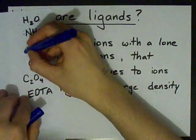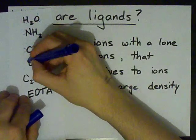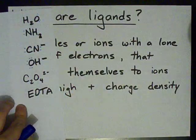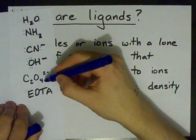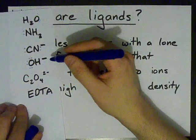A CN- ion has a lone pair on the C and on the N. This OH- ion, or hydroxide anion, has three lone pairs. This is the oxalate anion. It's got a negative 2 charge and some oxygens. It almost certainly has some lone pairs.